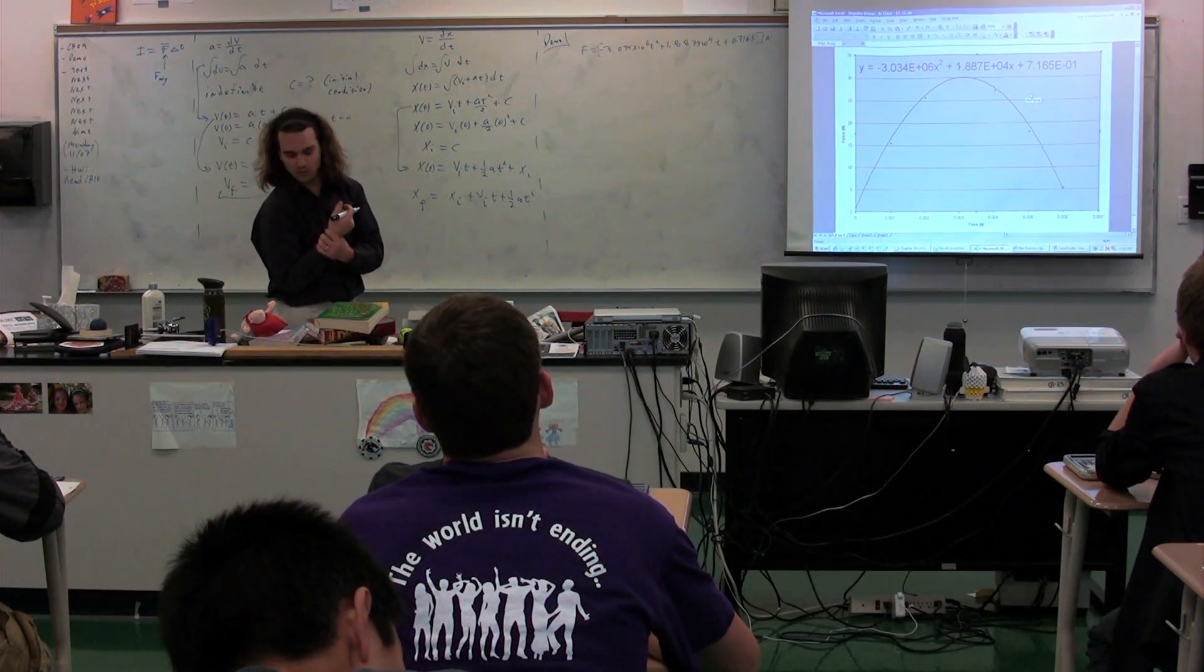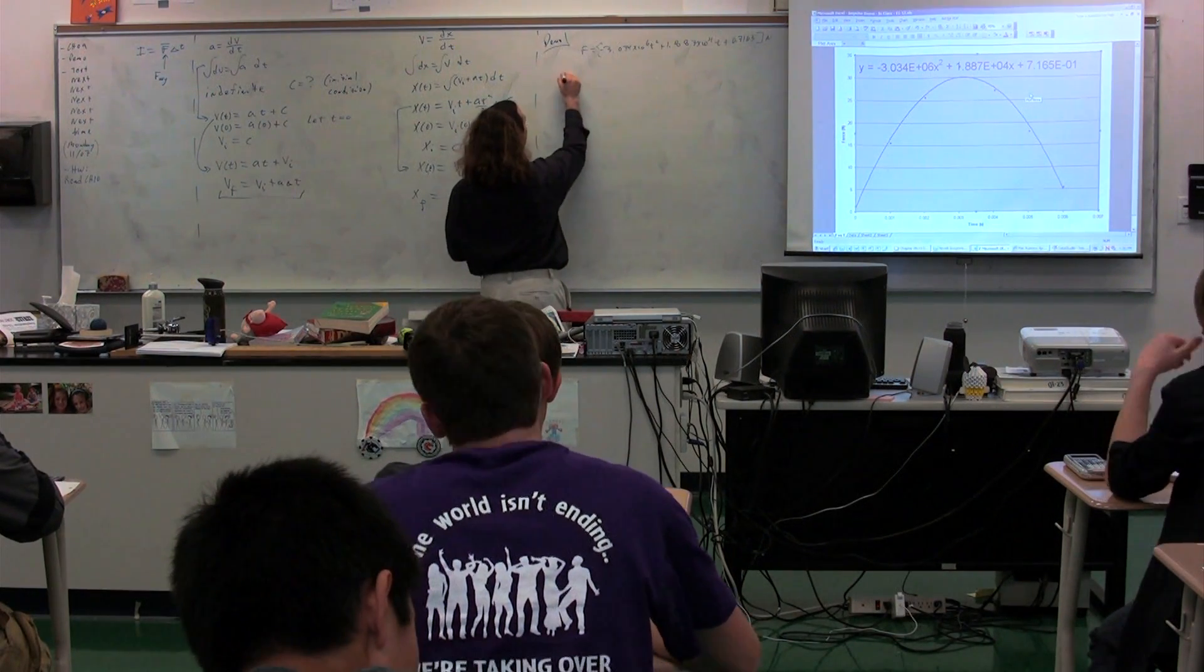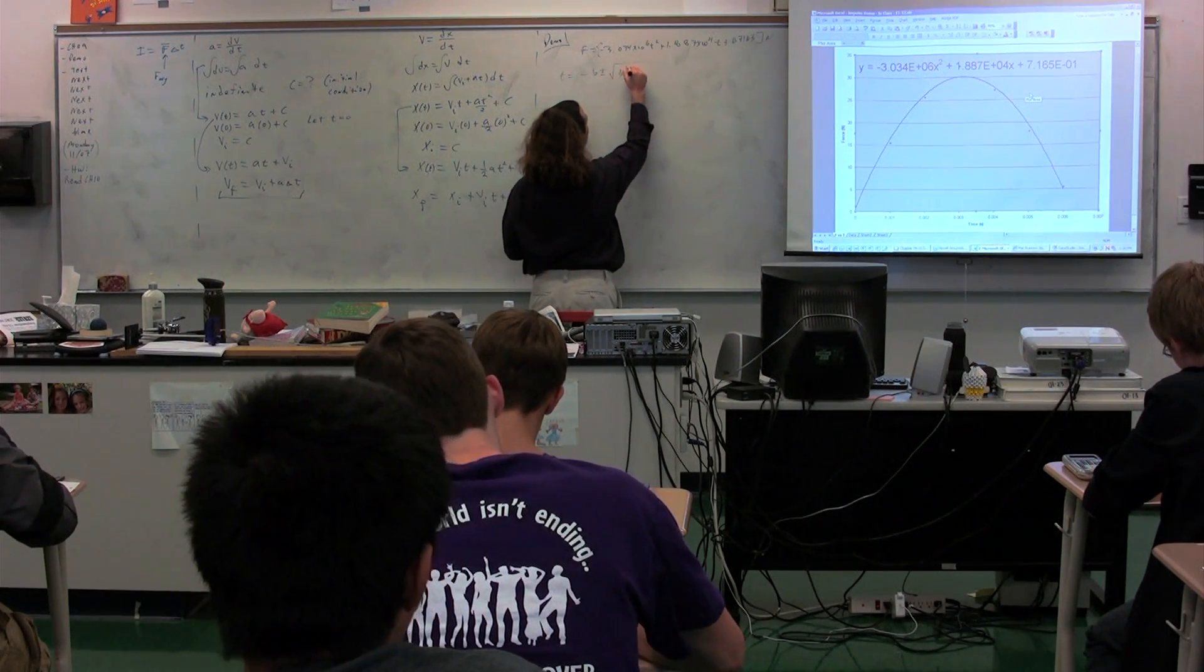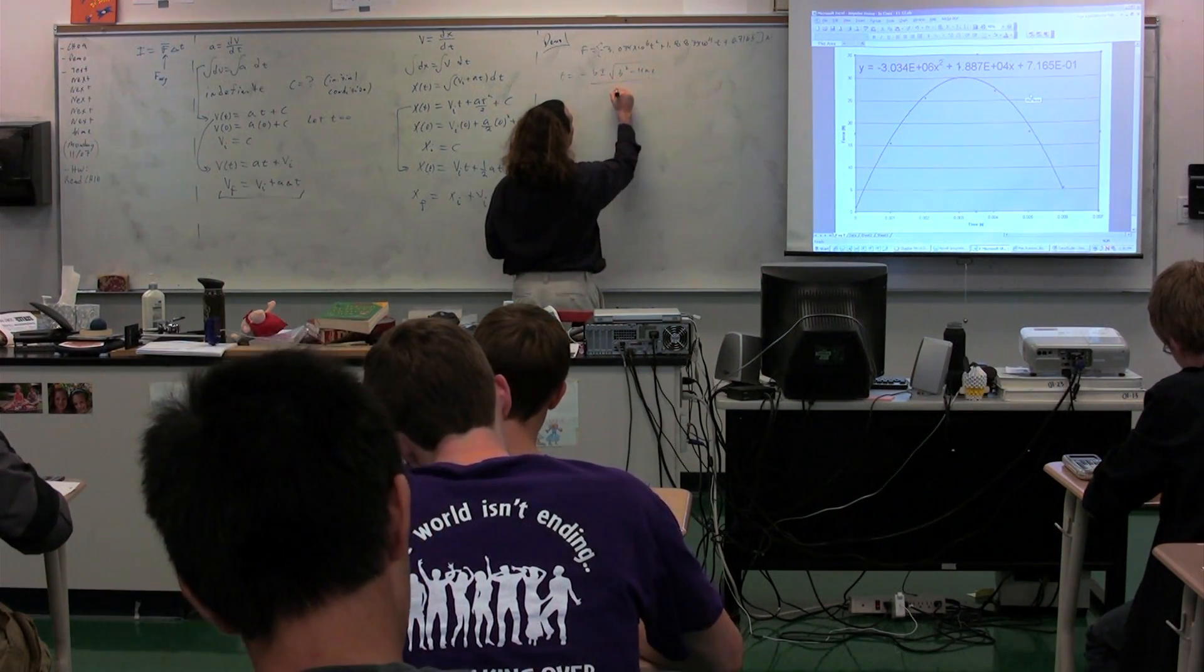So what we're going to do here is we're going to solve for time. So time is going to be equal to negative B plus or minus the square root of B squared minus 4AC all over 2A.